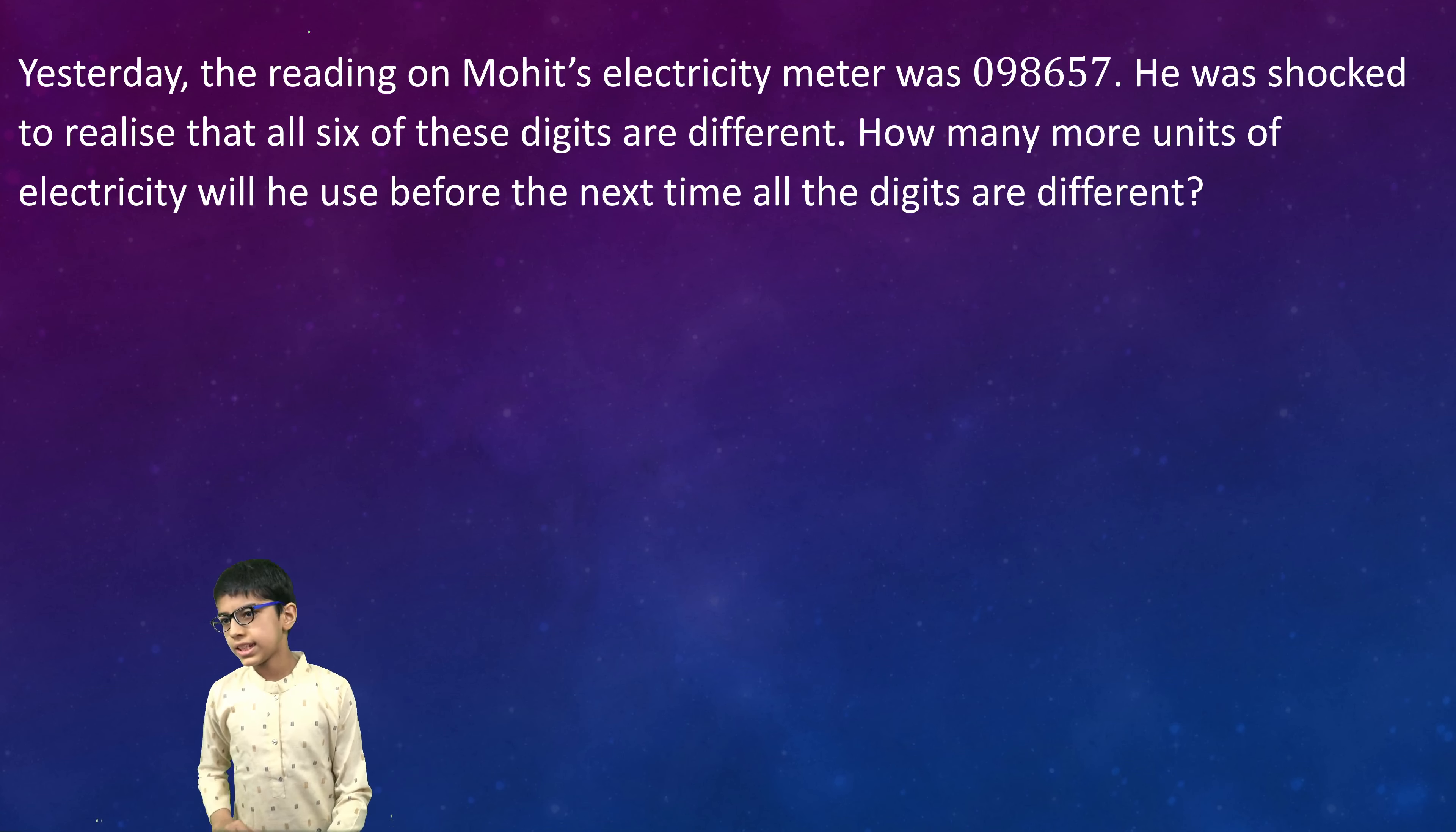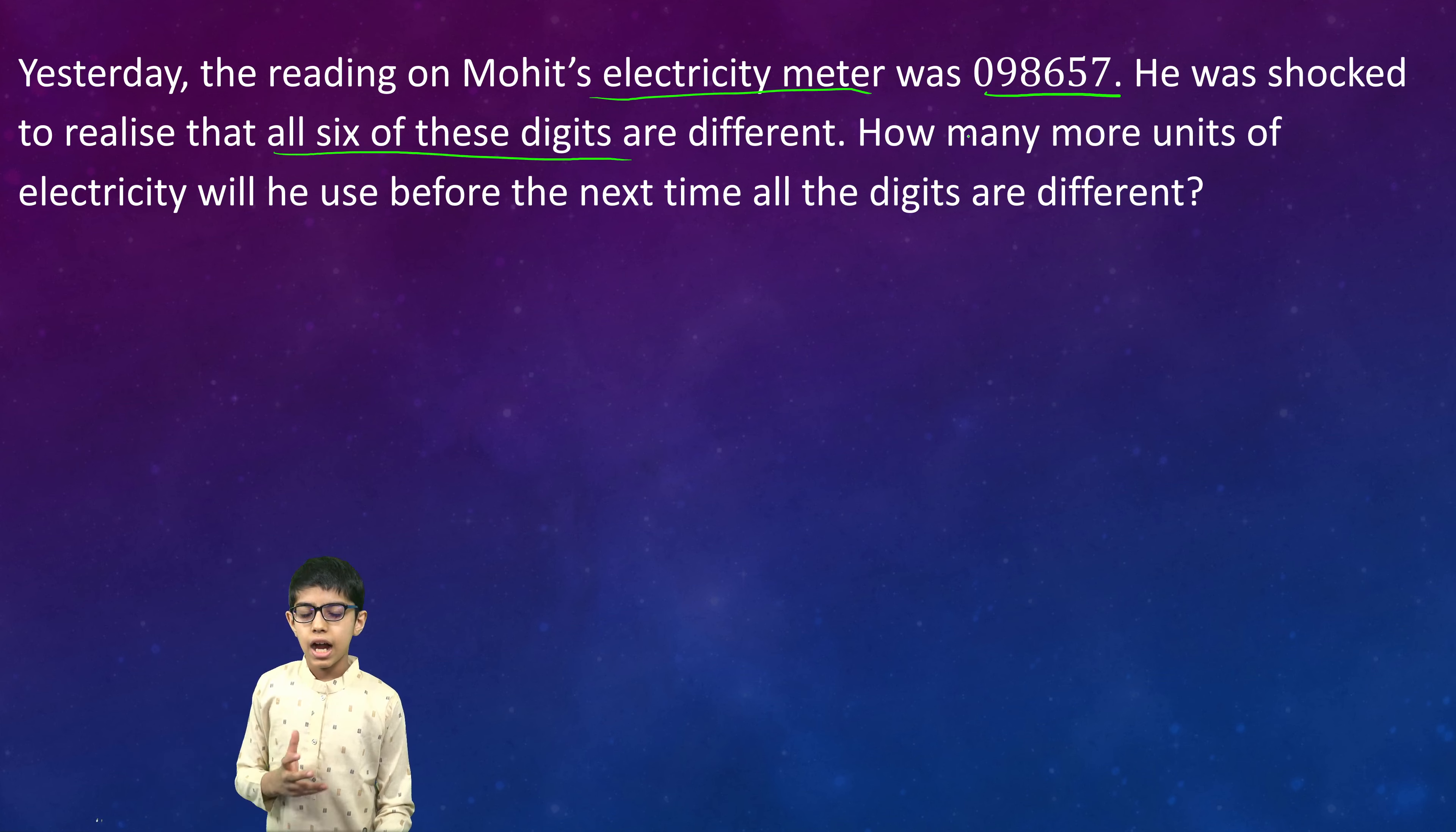An Electric Puzzle. Yesterday the reading on Mohit's electricity meter was 098657. He was shocked to realize that all six digits were different. How many more units of electricity will he use before the next time all the digits are different again?